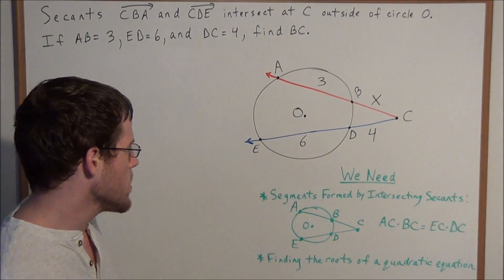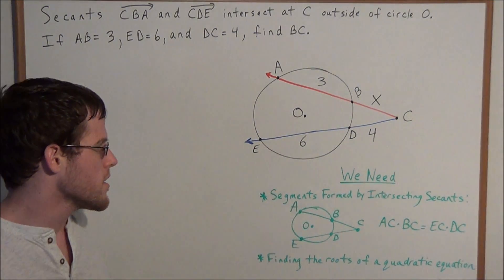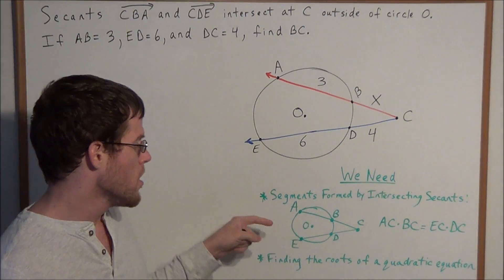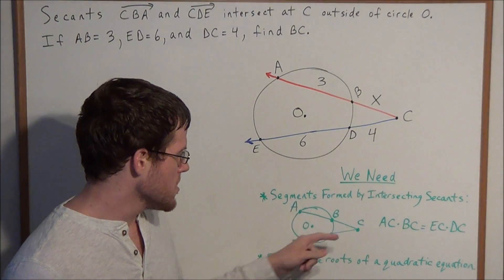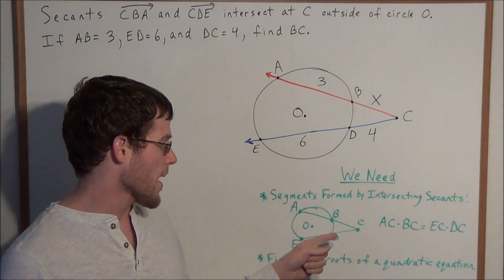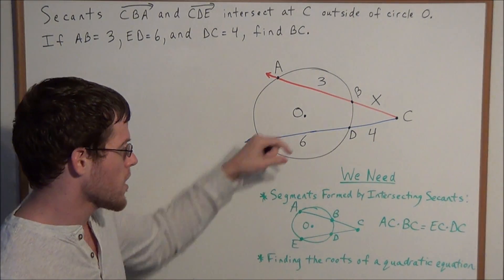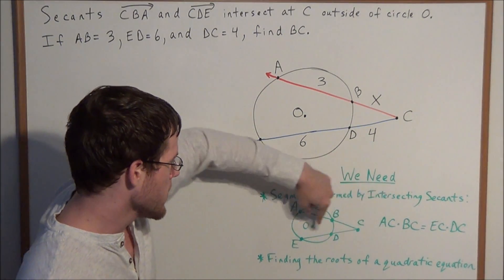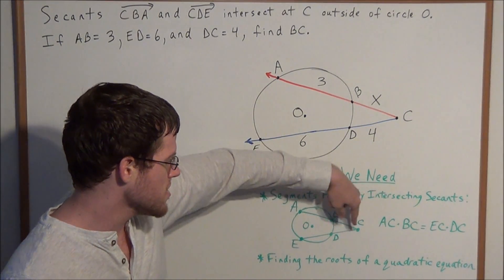Now we can use the segments formed by intersecting secants theorem, which states when we have some circle O with secants ABC and EDC, if these two secants intersect at some point outside of circle O, then the following equation holds: AC times BC equals EC times DC.